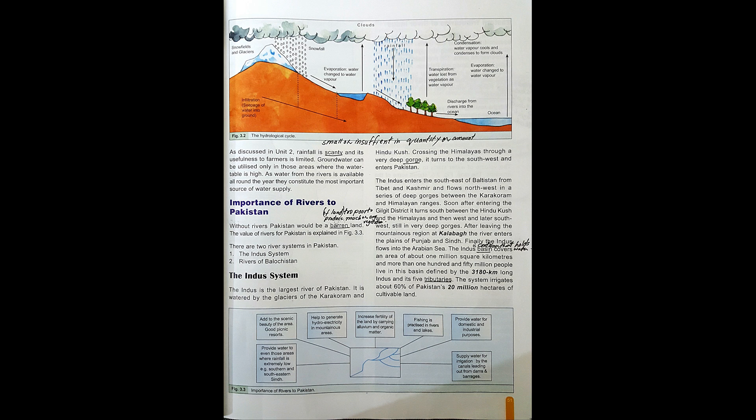The Indus Basin covers an area of about 1 million square kilometers, and more than 150 million people live in this basin, defined by the 3,180 kilometer long Indus and its five tributaries. The system irrigates about 60% of Pakistan's 20 million hectares of cultivable land. For today's lesson, you have to read pages 50 and 51 again and understand and learn properly the hydrological cycle and the Indus System. Thank you for listening. Take care. Allah Hafiz.